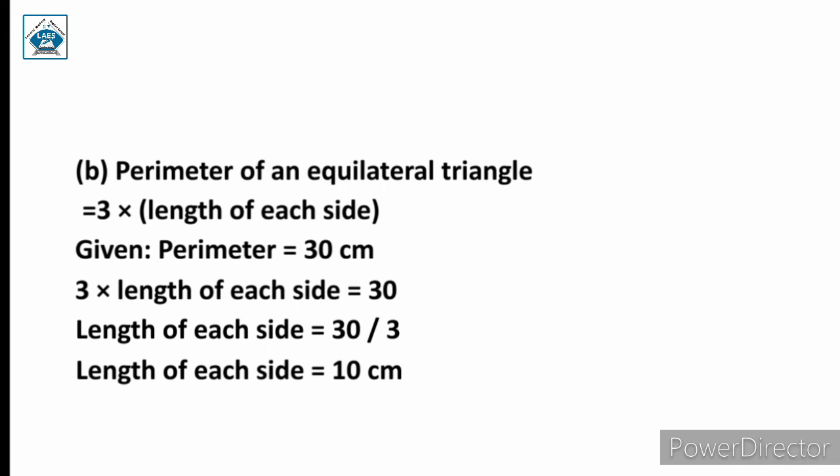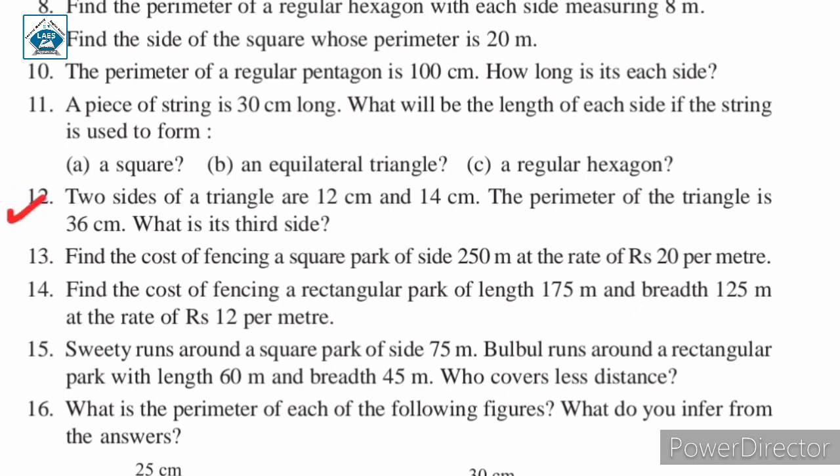For part c, the regular hexagon has six equal sides. Therefore, the perimeter equals 6 into length of each side. You need to divide 30 by 6 to find the length of each side of the regular hexagon. This is homework for you — solve it and write the proper solution in your notebook.